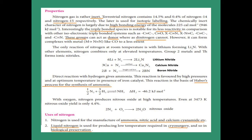Nitrogen forms a triple bond, but the triple bond has less reactivity compared to C≡C, C≡O, and C≡N. These groups act as donors (ligands). But N≡N never acts as a donor. However, sometimes nitrogen also acts as a ligand with a central metal atom, though much less than carbon monoxide.